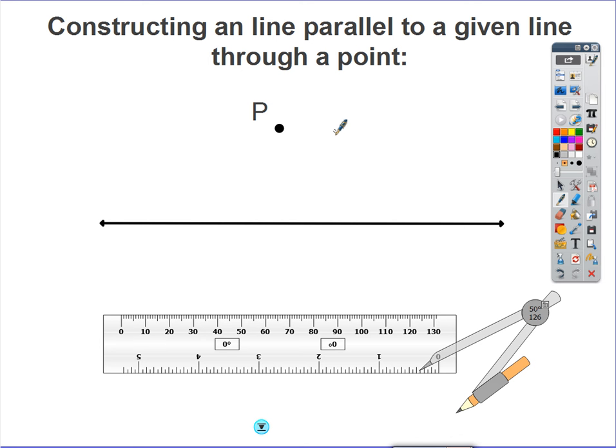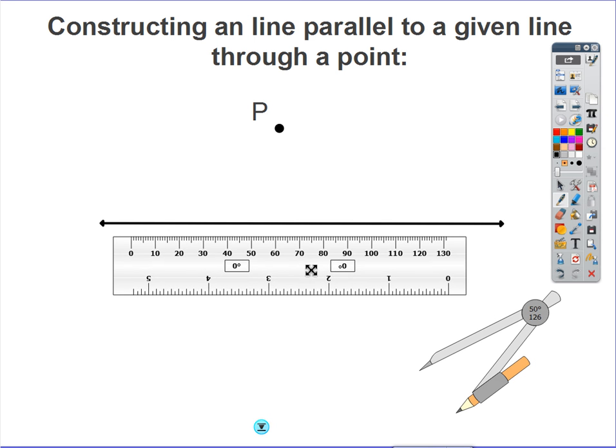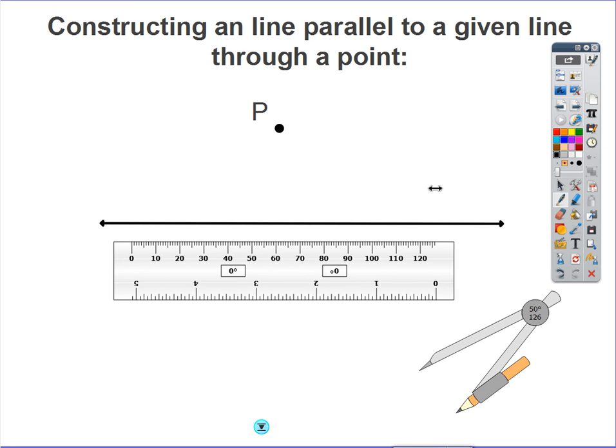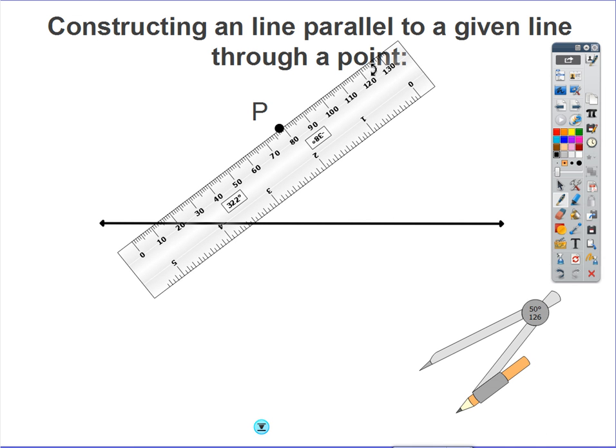The first thing that we're going to do is draw a line that's going to pass through the given line and the point P. Back in our parallel lines unit, this was called a transversal. So I'm going to take my straight edge, rotate it here, and make sure it passes through my line as well as through my point. And I'm going to draw that transversal, passing through point P and my line.